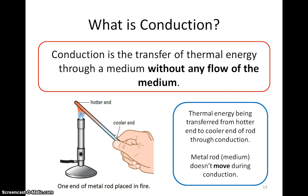Thermal energy is conducted along the metal rod from the hotter end to the cooler end. In other words, thermal energy is being transferred from the hotter end to the cooler end through conduction. Note that the rod did not move, or the metal in the rod did not flow, although thermal energy is flowing from the hotter end to the cooler end. This is a key characteristic of conduction. This is also what it means when we say without any flow of the medium.